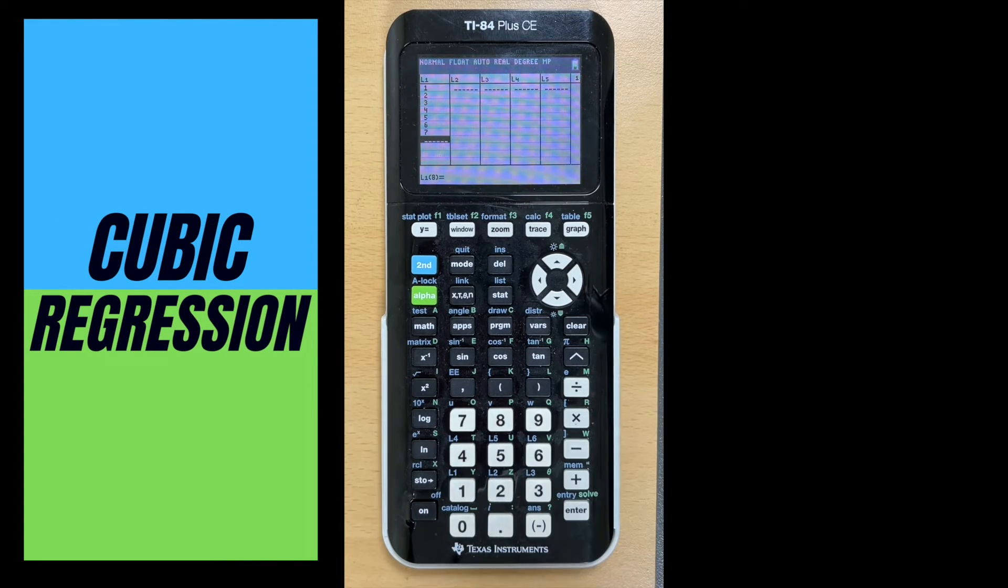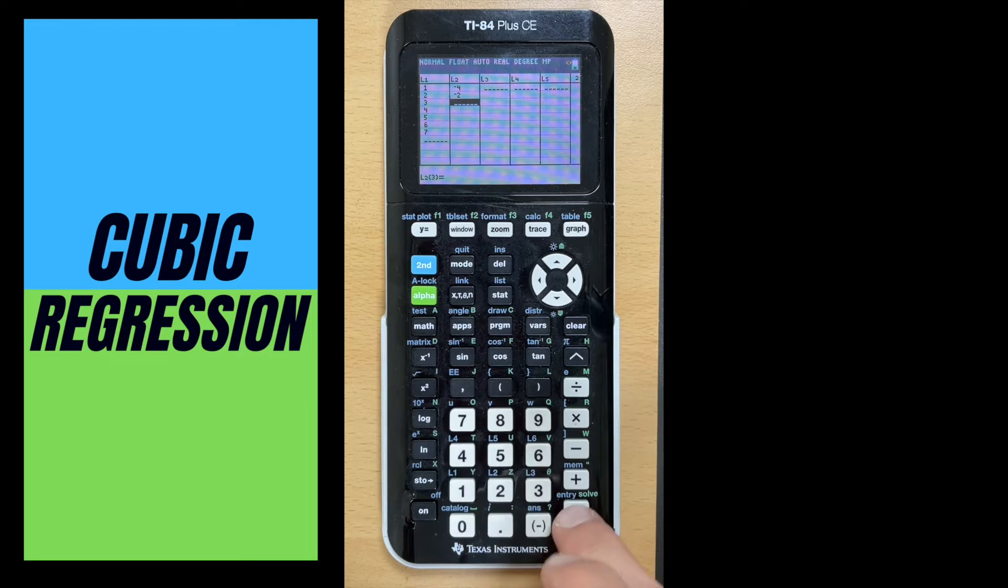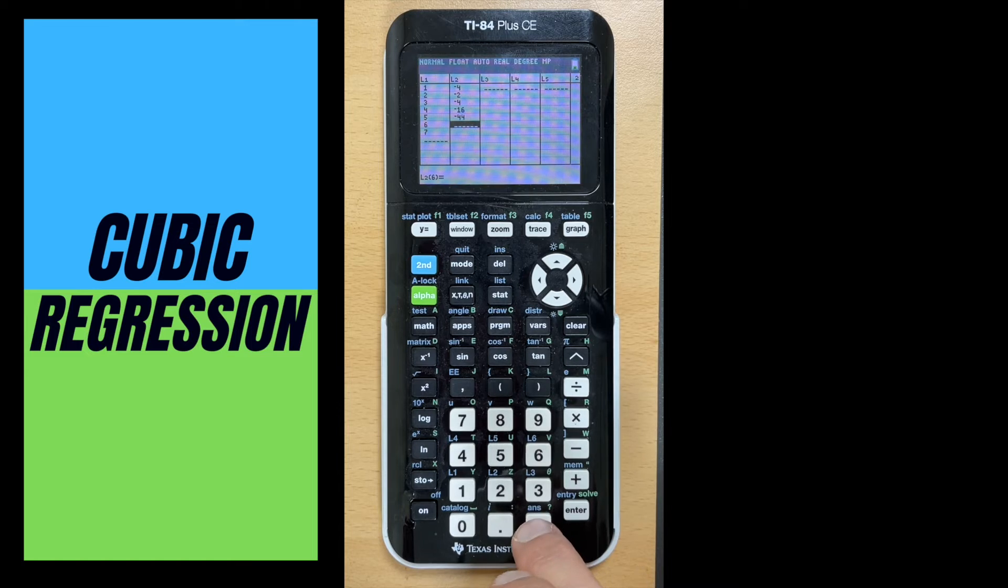Now we're going to go over to L2, and that's going to be our y values. For this example we're going to use negative 4, negative 2, negative 4, negative 16, negative 44, negative 94, and negative 172.